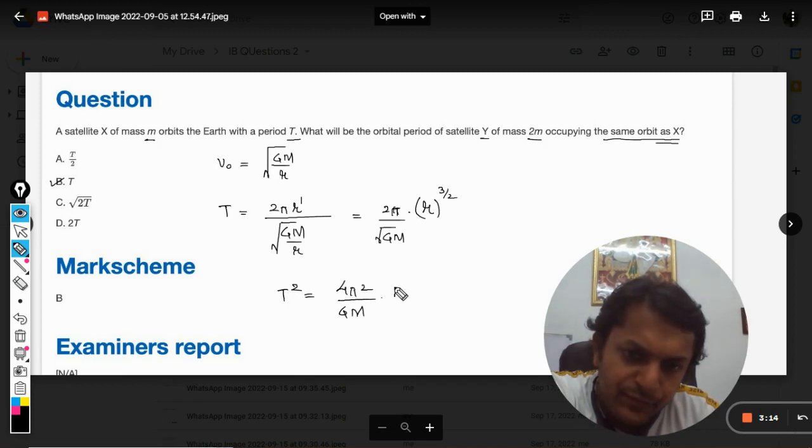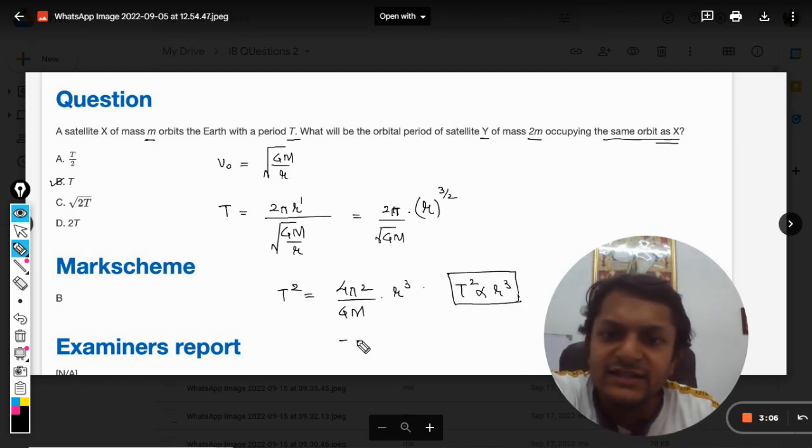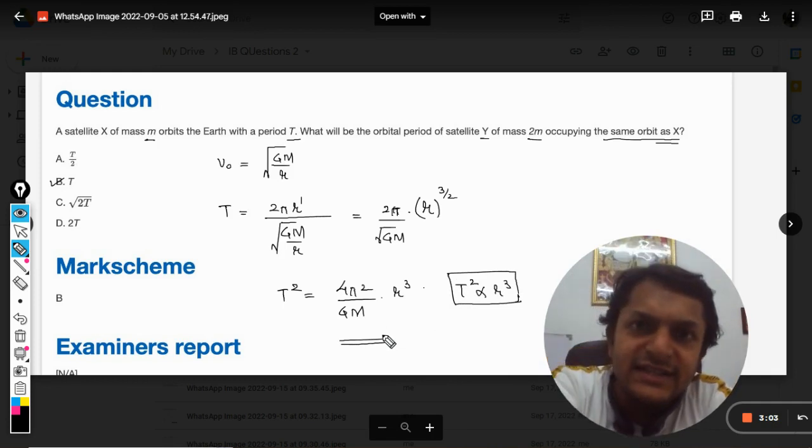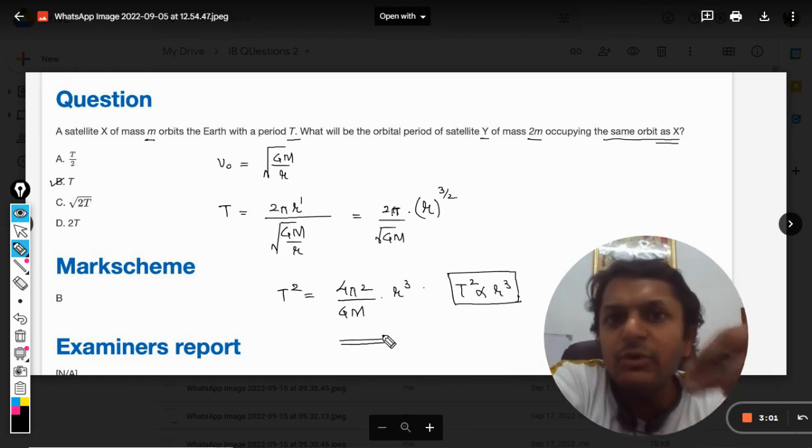Now as per this complete formula is concerned, we can see that the time period of the revolution does not depend on the mass of the satellite, which will be given by small m.